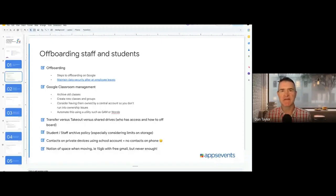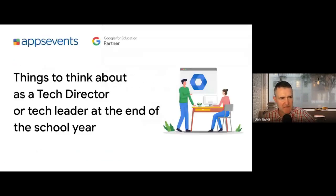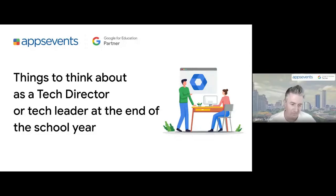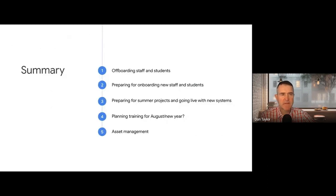We're going to talk about things to think about as a tech director at the end of a school year. Jamie and Charlie are going to mention a few things at the beginning, then we'll open it up for discussion. We've identified five key areas, and we'd love to have feedback and input from people here.